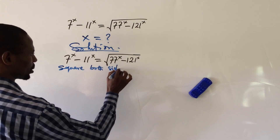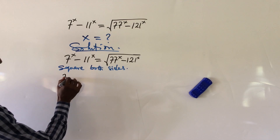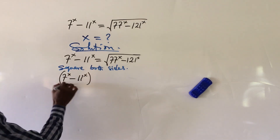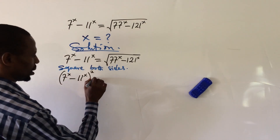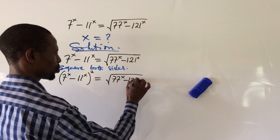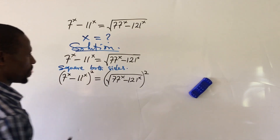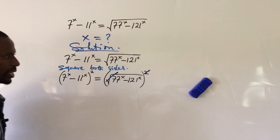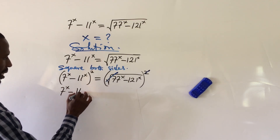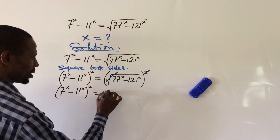Taking the square of both sides, we get: 7 to the power of x minus 11 to the power of x, all to the power of 2, equals the square root of 77 to the power of x minus 121 to the power of x, squared. The square and square root cancel on the right-hand side, leaving 77 to the power of x minus 121 to the power of x.